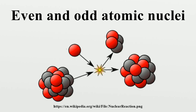Also, the nuclear spin is integer for all even-A nuclei and non-integer for all odd-A nuclei. The neutron-proton ratio is not the only factor affecting nuclear stability. Adding neutrons to isotopes can vary their nuclear spins and nuclear shapes, causing differences in neutron capture cross-sections, gamma spectroscopy, and nuclear magnetic resonance properties. If too many or too few neutrons are present with regard to the nuclear binding energy optimum, the nucleus becomes unstable and subject to certain types of nuclear decay, including beta decay, electron capture, or other exotic means such as spontaneous fission and cluster decay.